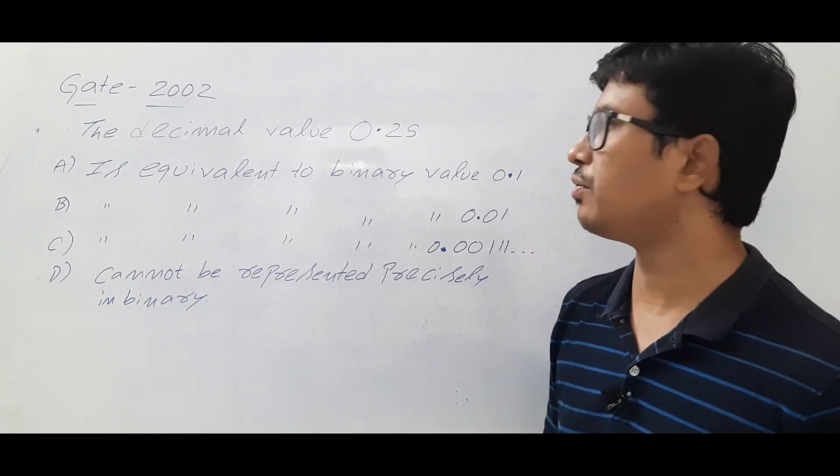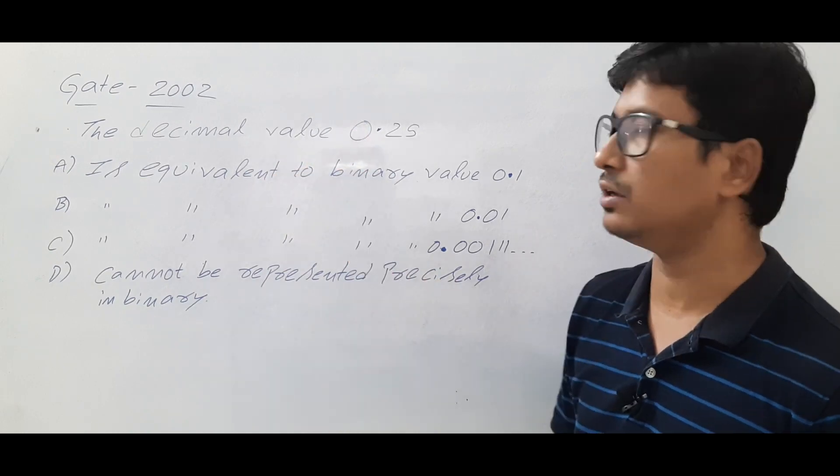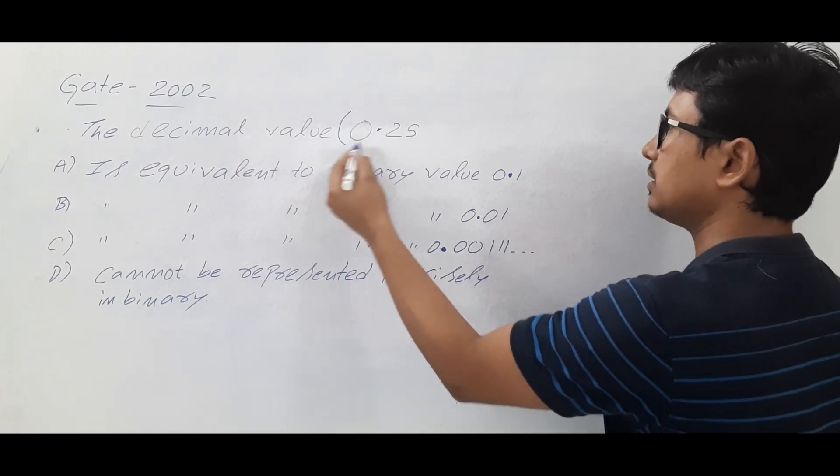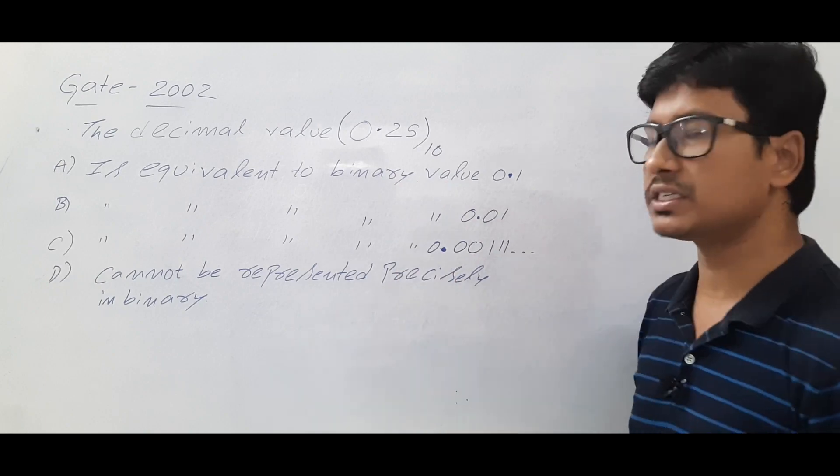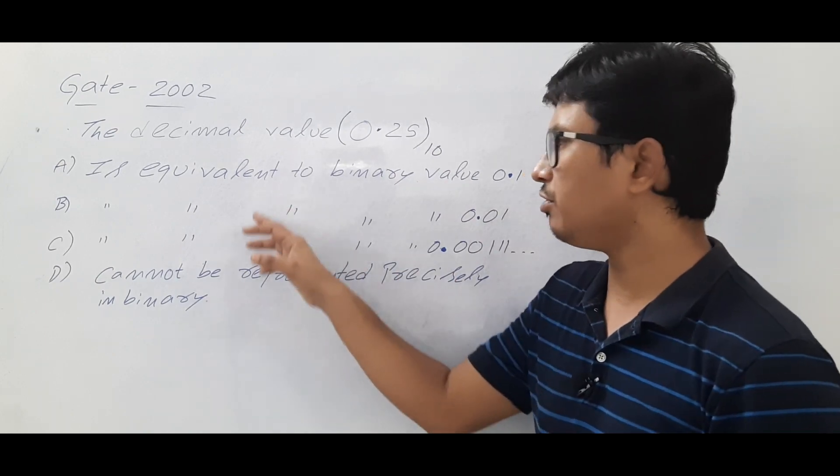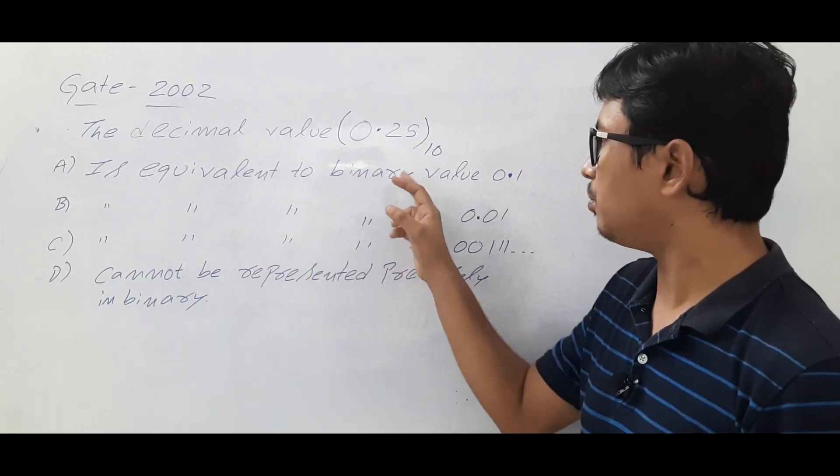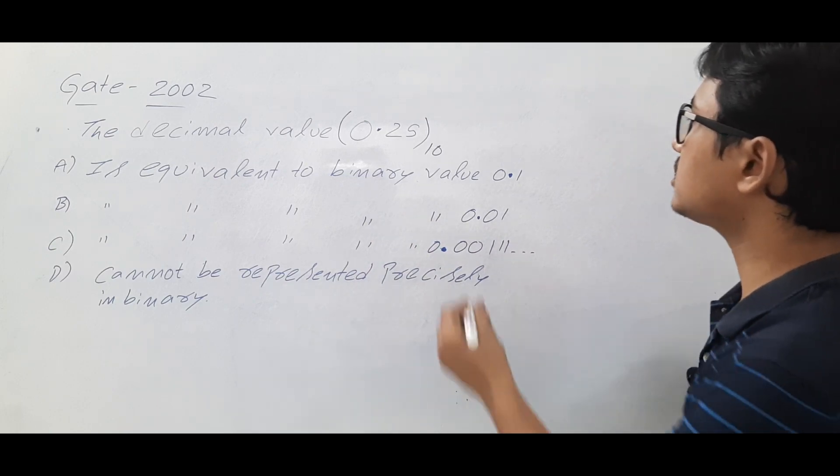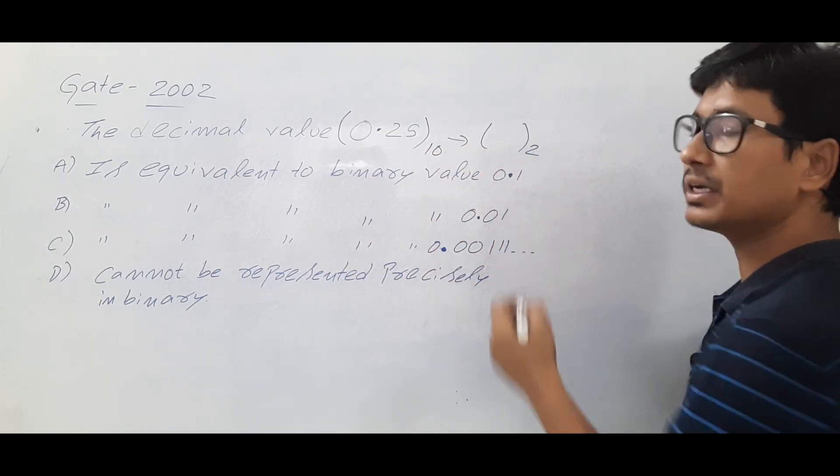From this question, what you have understood is they have given a decimal value which is in base 10. Now if you see all the options, they are telling about the binary value. So they are asking you to convert this value to a binary number.